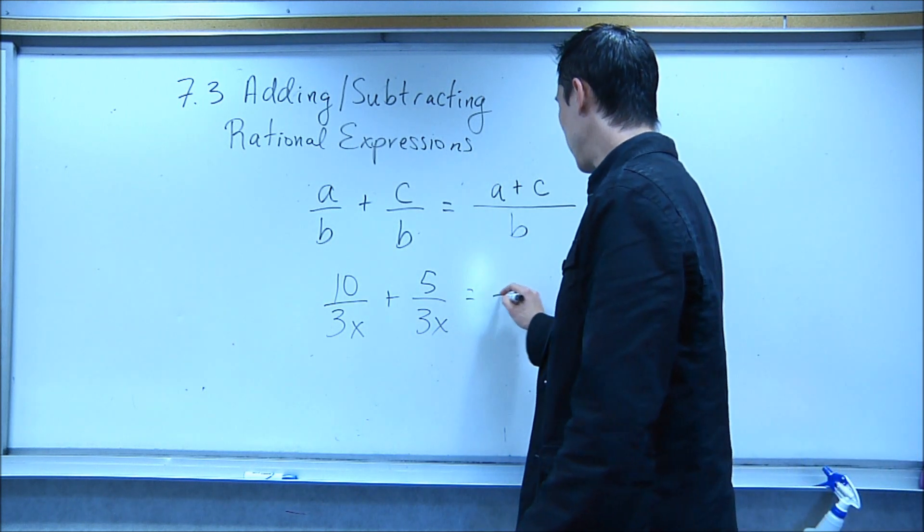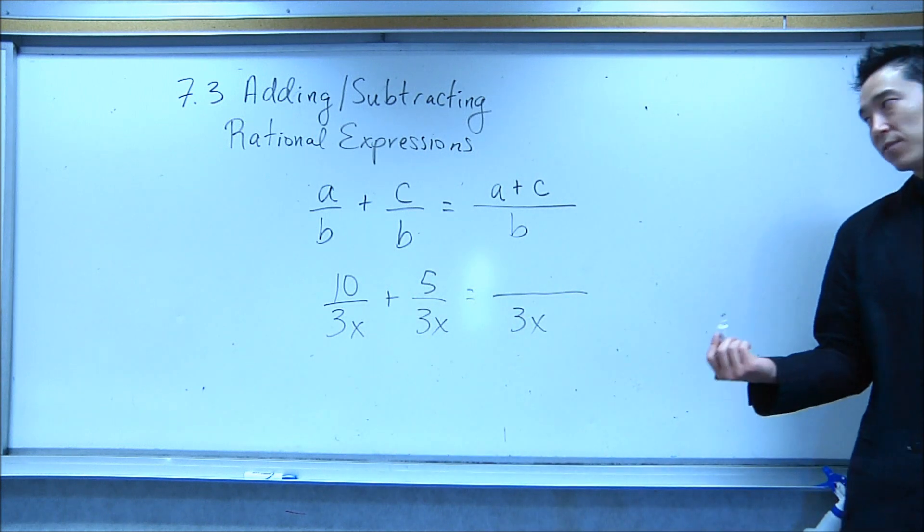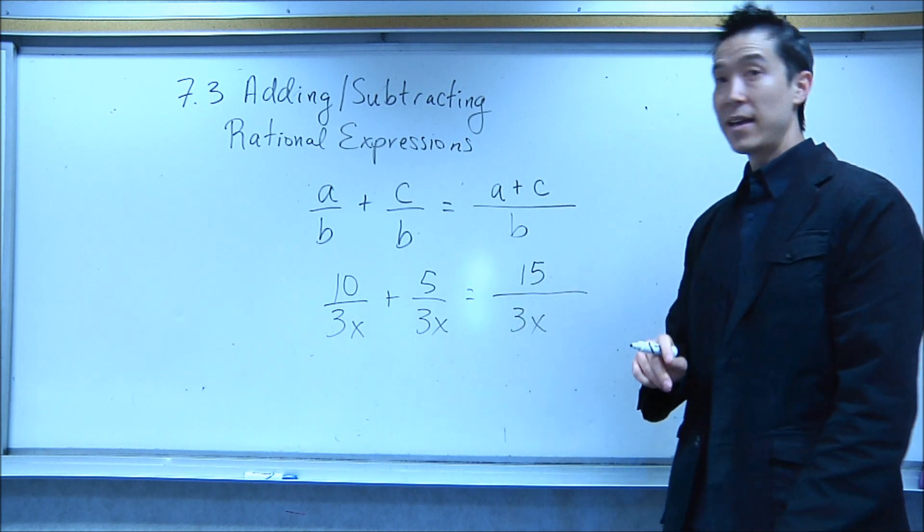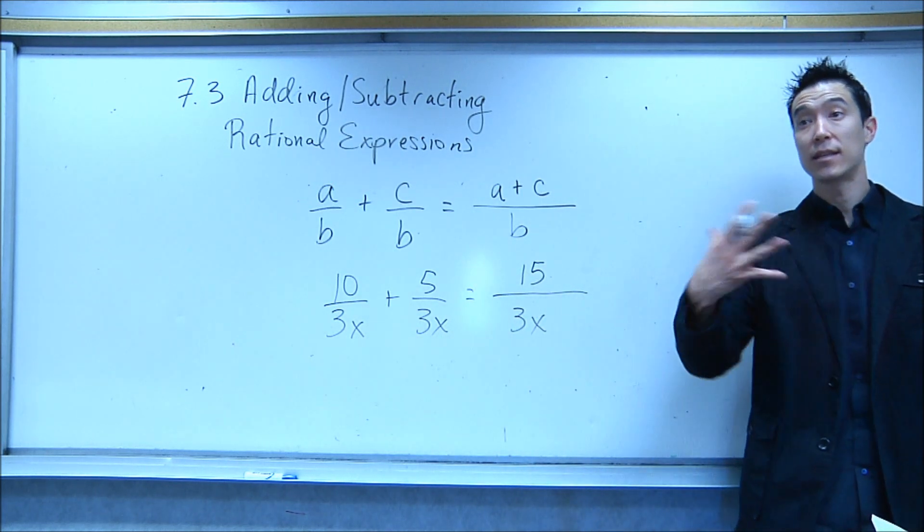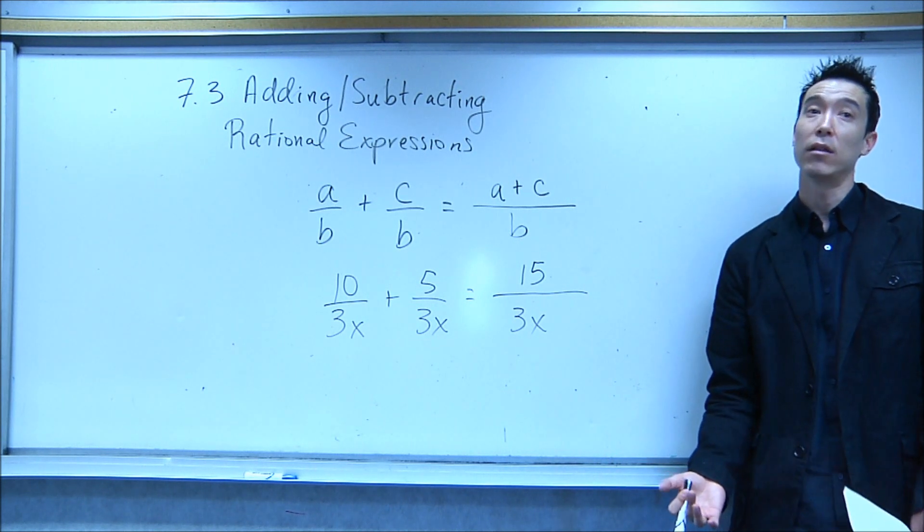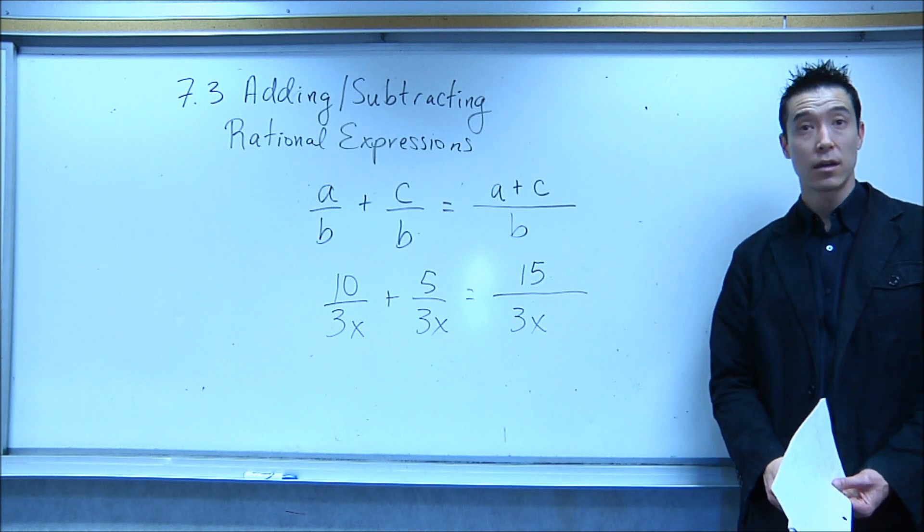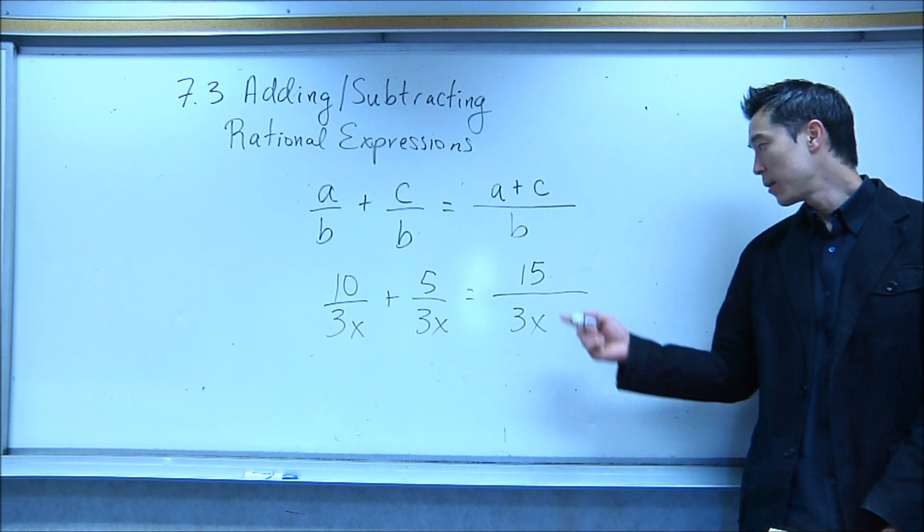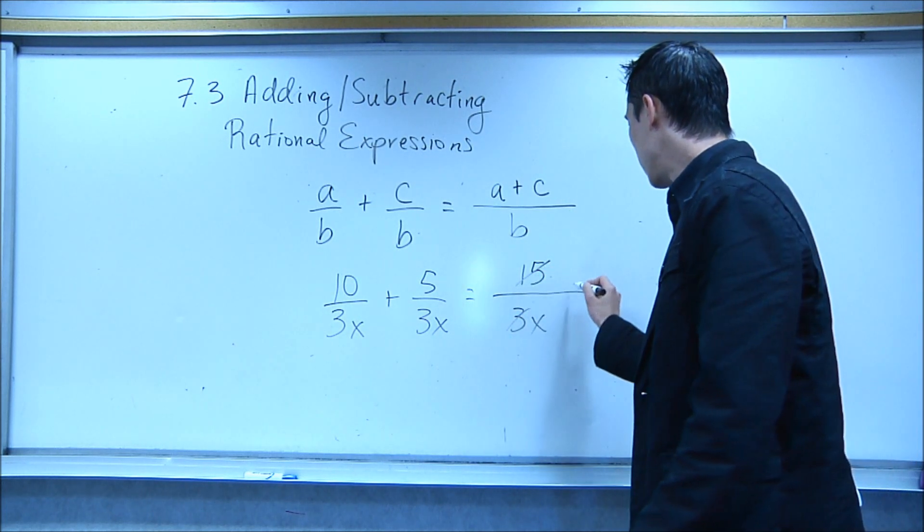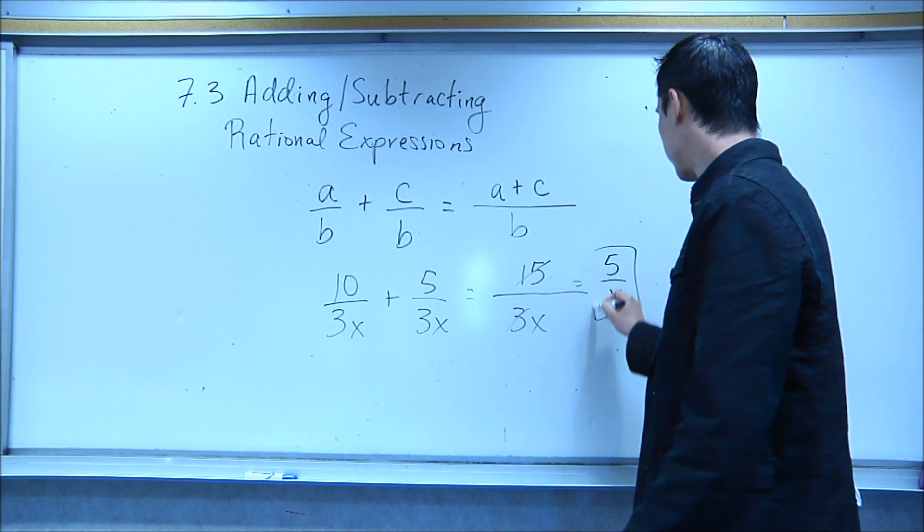I'm going to keep the denominator, 3x, and I'm going to combine the numerators. 10 plus 5. And what is 10 plus 5? 15. Then, once you guys have put it together into a single fraction, now it's your time to reduce, which is what we did all last section. Can 15 over 3x be reduced at all? Sure. I mean, 3 goes into 15 five times, so I'm going to reduce this. And our final answer will be 5 over x.